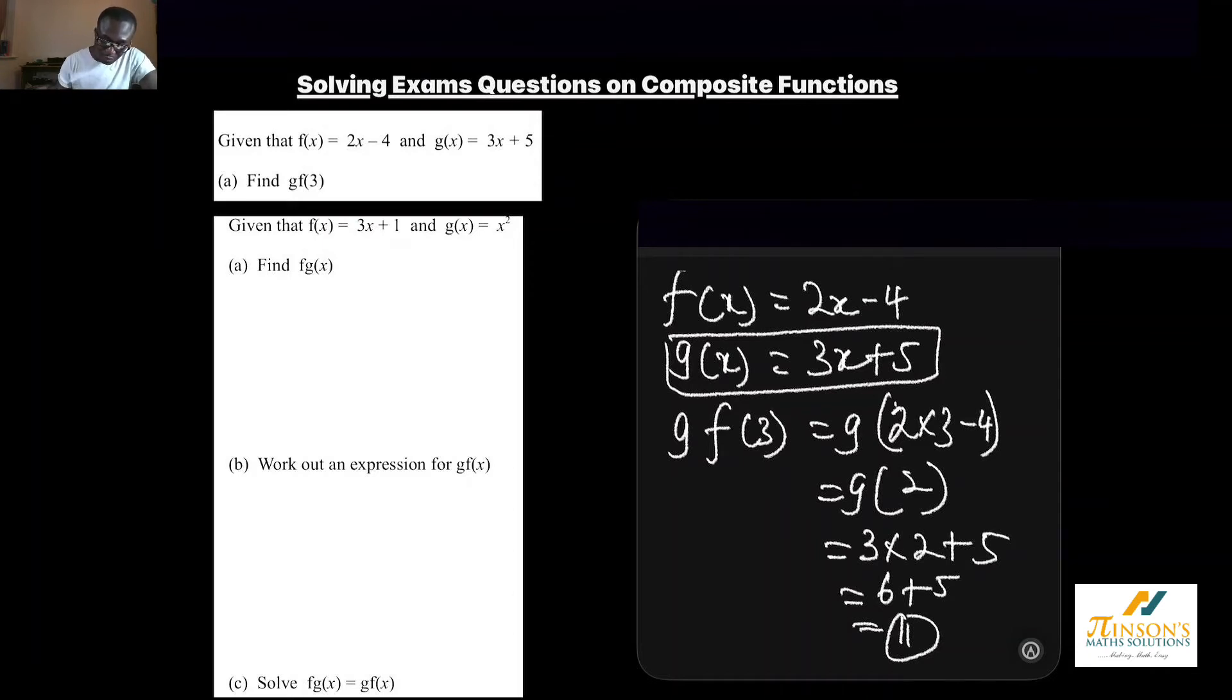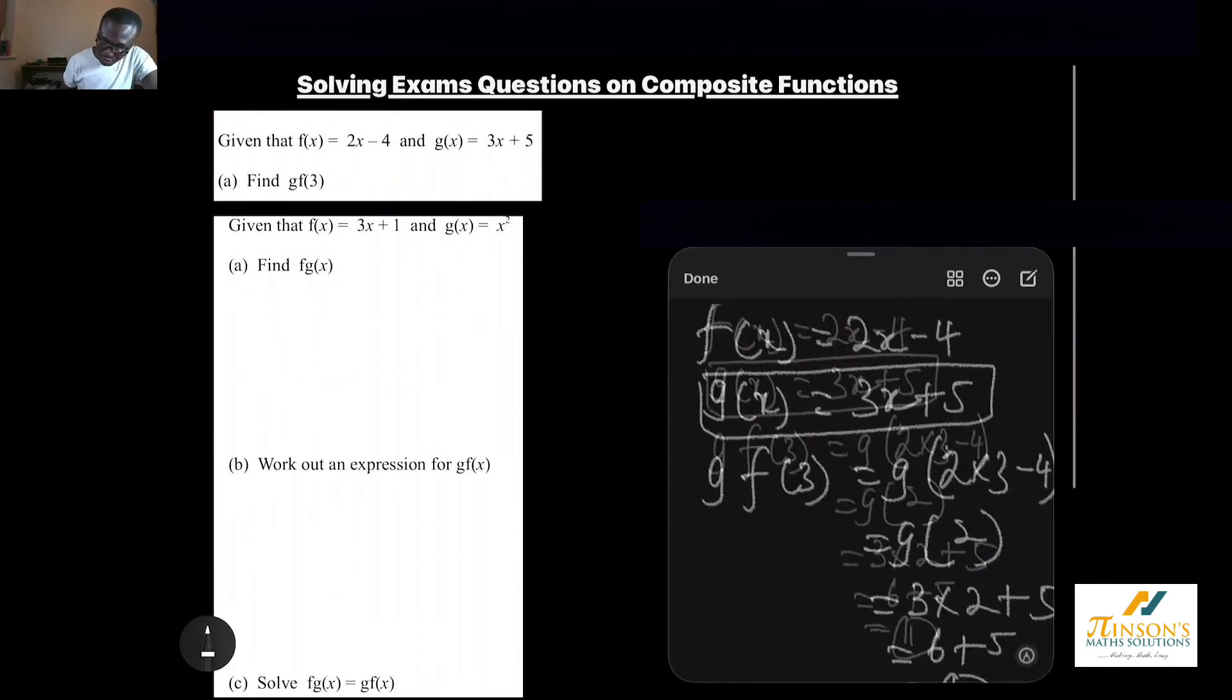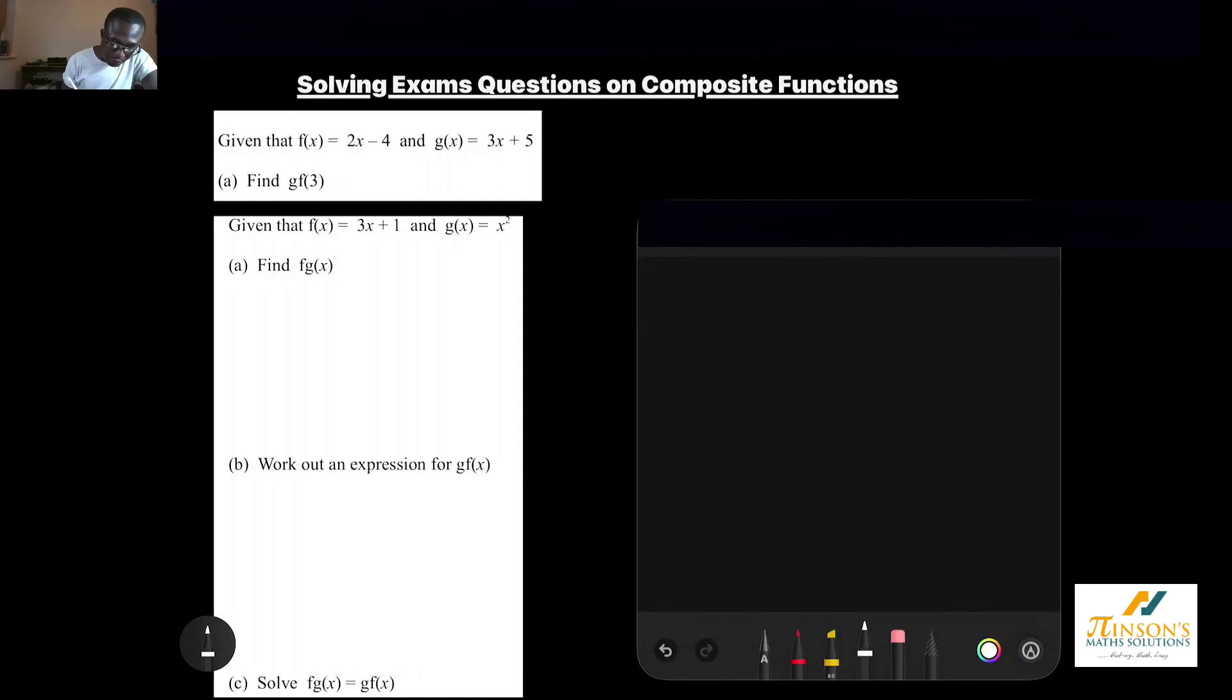Now, we'll also be looking at the next one. We are told that the function f is 3x plus 1 and the function g is x squared. So if we want f of g of x, we're going to make sure we've got our function f to be 3x add 1 and g to be x squared.